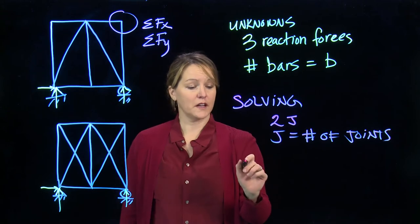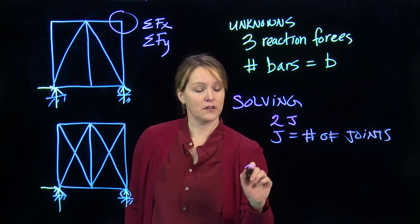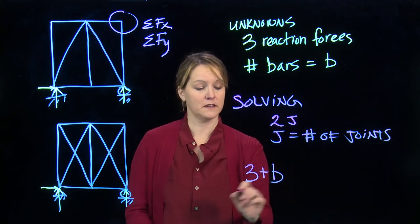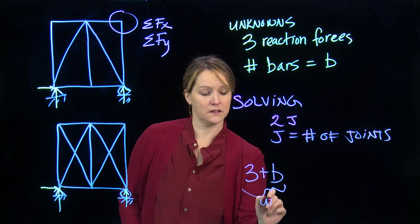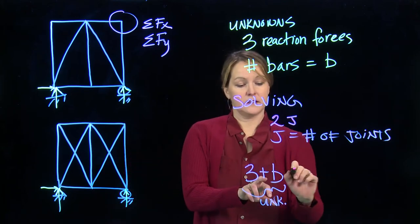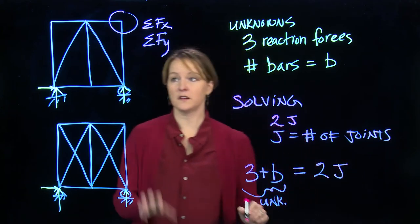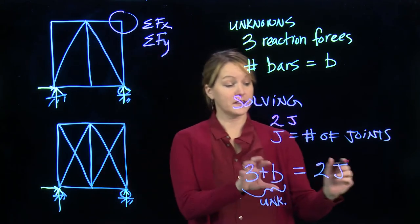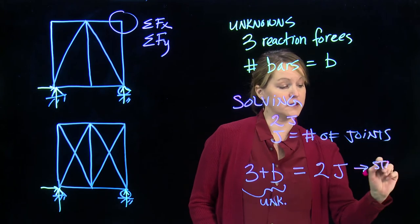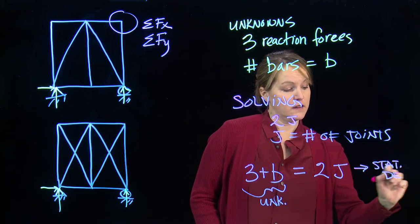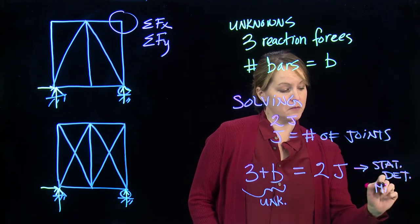So if I have a truss, what I look at is I look at 3 plus B. These are my unknowns. And I see if they are equal to 2J, two times the number of joints. If that's the case, I have a statically determinate system, and that is the minimum number of bars.